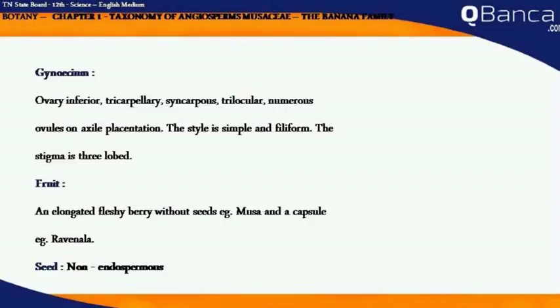Fruit: An elongated, fleshy berry without seeds — example, Musa. Or a capsule — example, Ravenala. Seed: Non-endospermous.